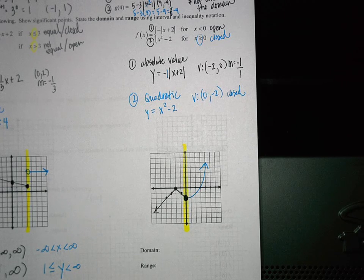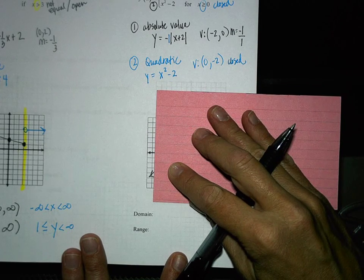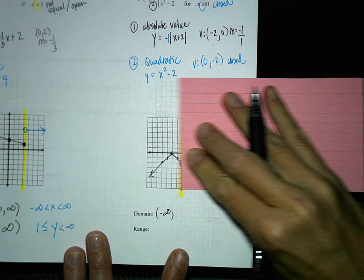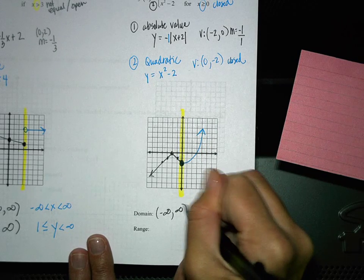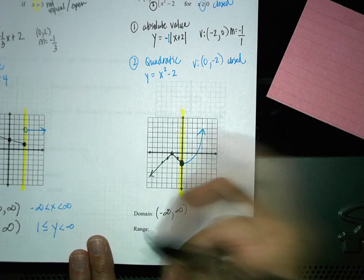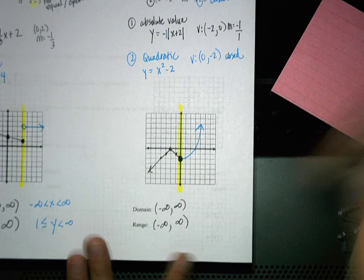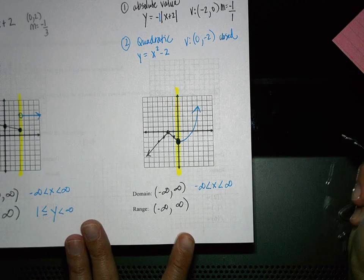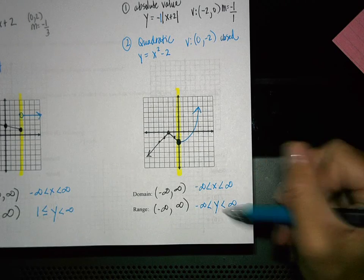Now we need to talk about domain and range. Going from left to right for my domain — there's an arrow, so we start with negative infinity using a parenthesis. Moving along, we get to another arrow, so it goes to positive infinity. For the range going from bottom to top — there's an arrow at the bottom, so negative infinity. Then it goes all the way to an arrow at the top, which means positive infinity. In inequality notation: negative infinity less than x less than positive infinity. And for range remember it's a y in the middle — negative infinity less than y less than positive infinity.